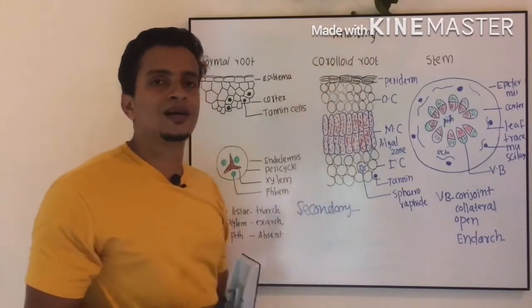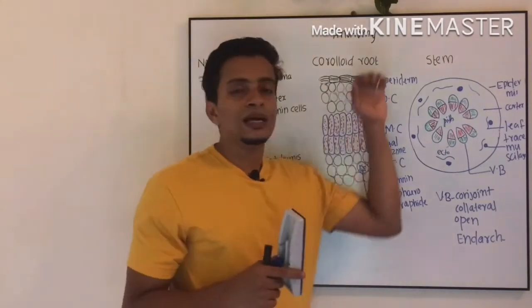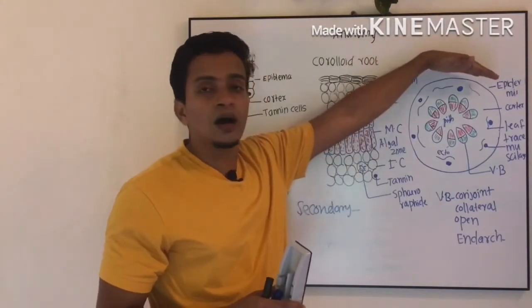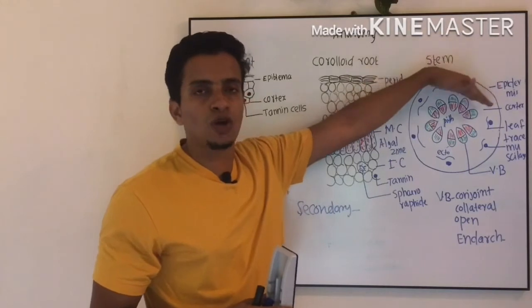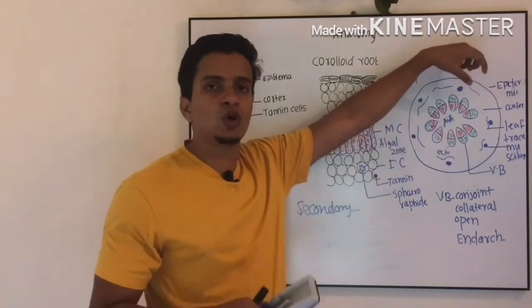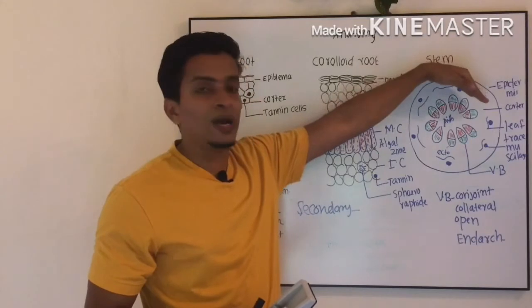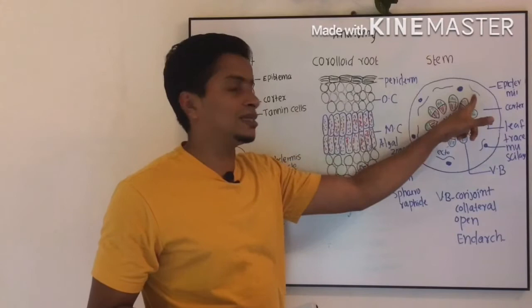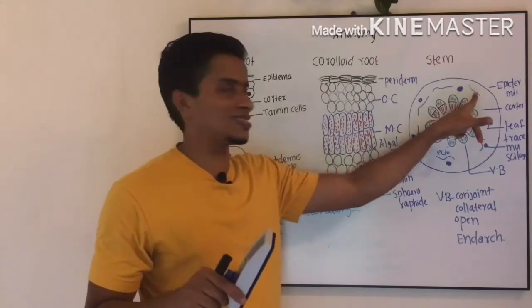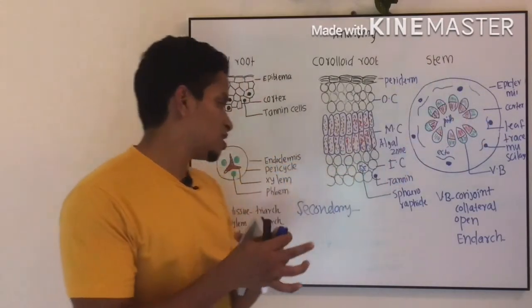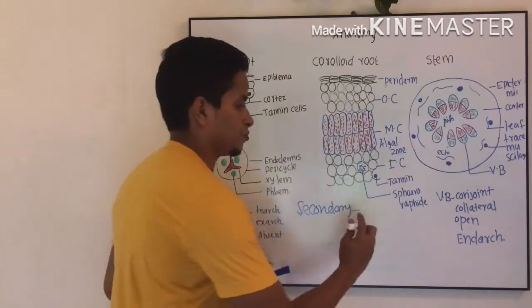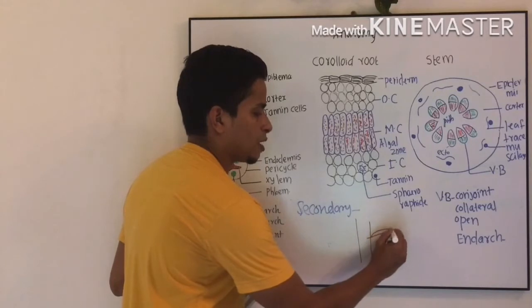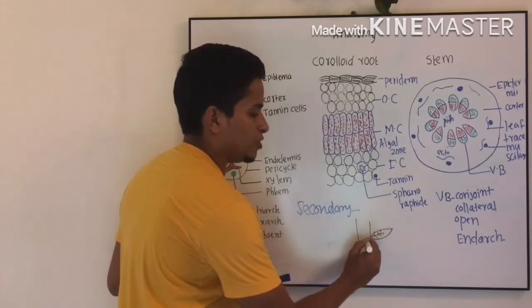So this is about the internal anatomy of coraloid root. Coming to the internal anatomy of stem, you can see which is differentiated into epidermis, cortex, and a stela region. Epidermis is the outermost layer which is followed by cortex, which is a broad cortex. In the cortical region you can see the presence of leaf traces and mucilaginous cells. What do you mean by a leaf trace? It is the supply from main stem to the leaf. Vascular supply from main stem to the leaf is known as leaf trace.